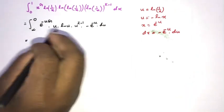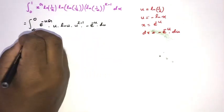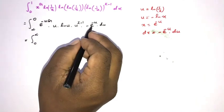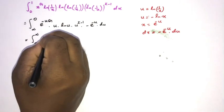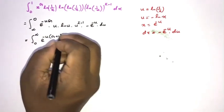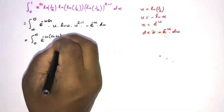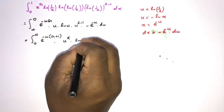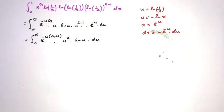When we change the limits, the minus sign gets cancelled. So we can write the integral from 0 to infinity of e to the minus u times g plus 1, times u to the pi, times natural log of u, du.